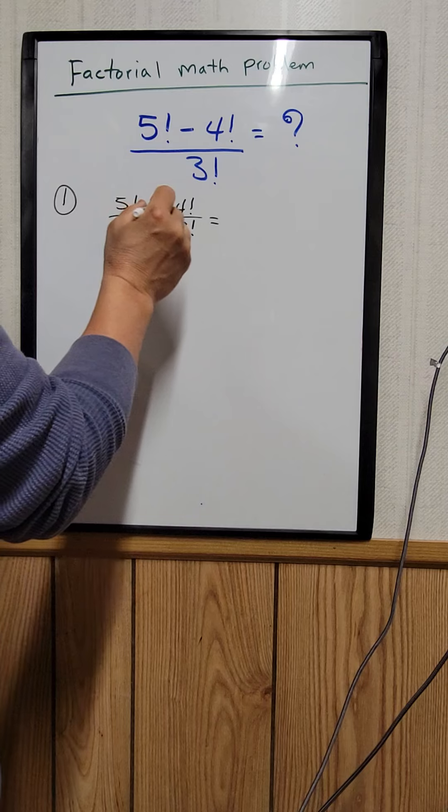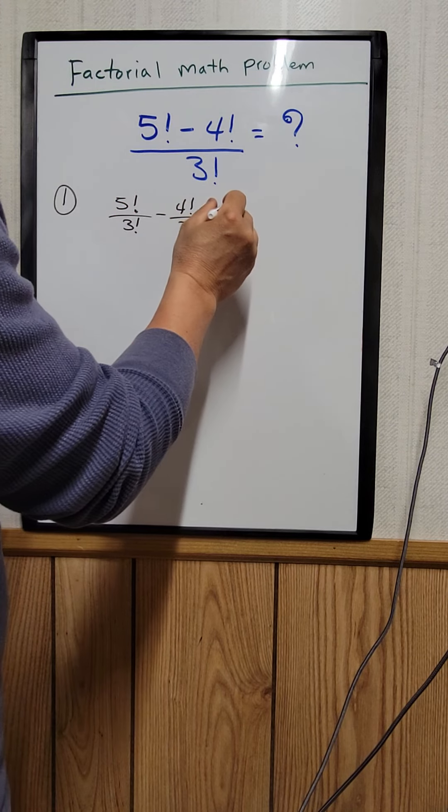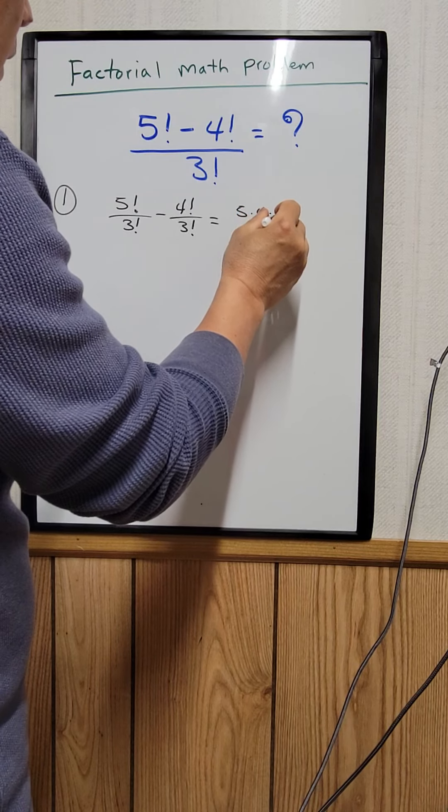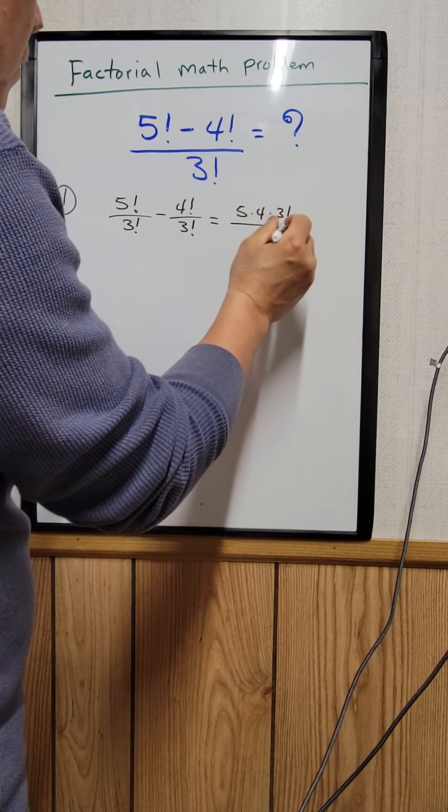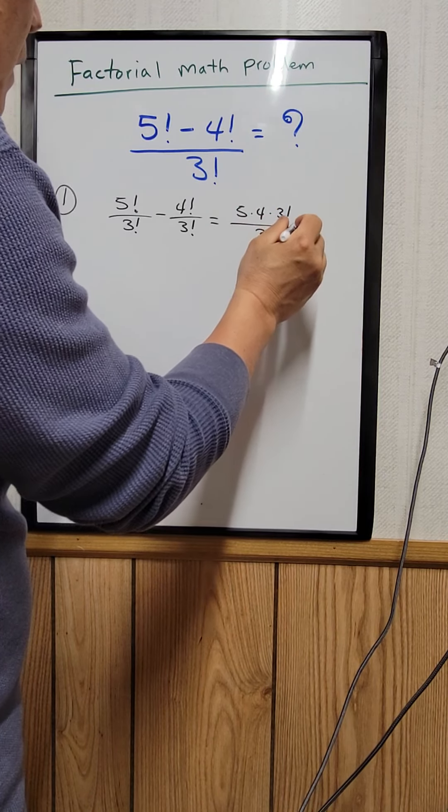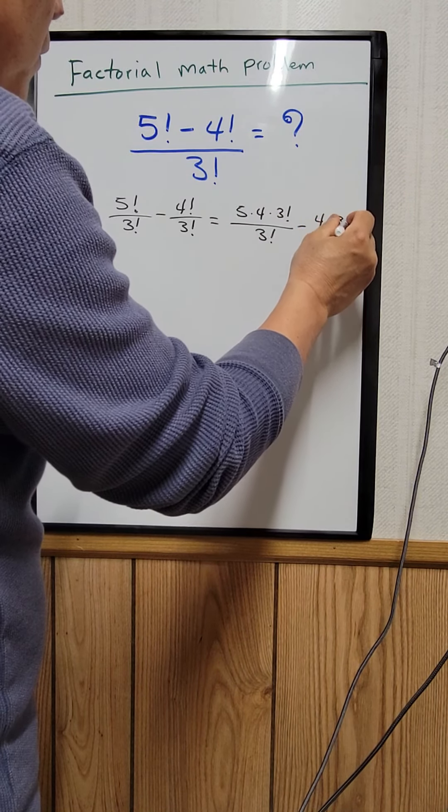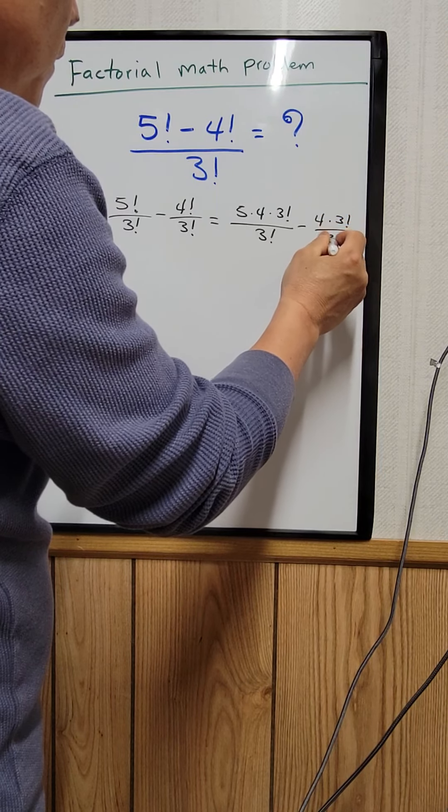5 factorial can be written as 5 times 4 times 3 factorial over 3 factorial. And 4 factorial can be written as 4 times 3 factorial over 3 factorial.